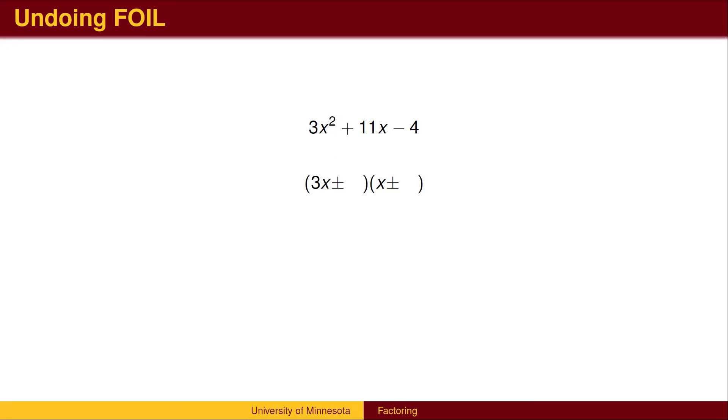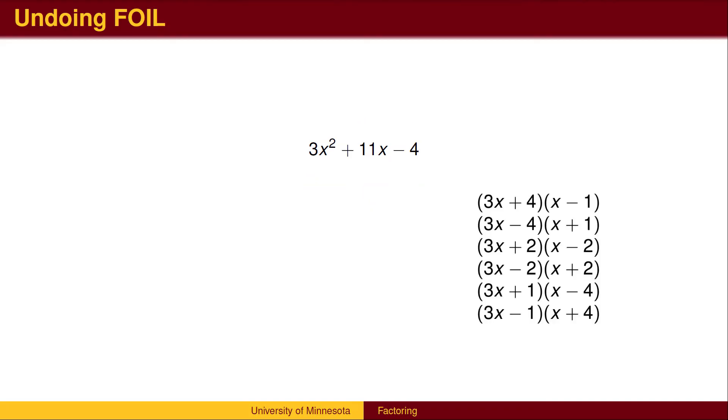In this case, 3 is prime. So 3 can only be factored as 3 times 1. It does not matter in which order we write the factors. All we have to do is figure out how to split the 4. We have two choices. Either 1 times 4, or 2 times 2. But we also have a choice as to which factor, the 1 or the 4, pairs with the 3x. Also, the last term was not 4, but instead was negative 4. So 1 of the two constants will be subtracted. But which one? Unfortunately, we need to try each possibility to find the correct one.